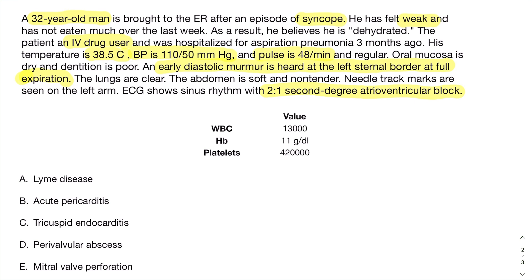For acute pericarditis, you'd expect positional chest pain that improves with leaning forward. There are no complaints of chest pain here — just a murmur and an AV block. Neither of those findings is characteristic of acute pericarditis, so that answer is far away.